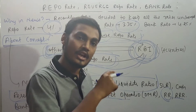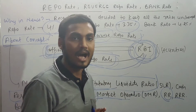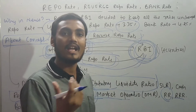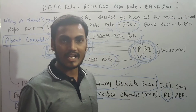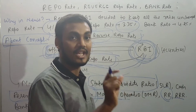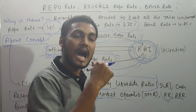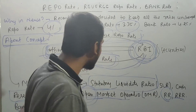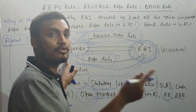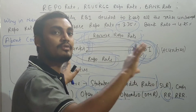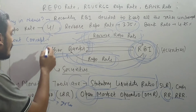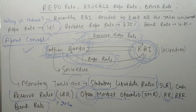Why is this done? To maintain liquidity in the market. If there is excess liquidity, the RBI sucks it out. If there is a lack of liquidity, the RBI lends money to other banks, which then lend to borrowers, thereby maintaining liquidity in the market.